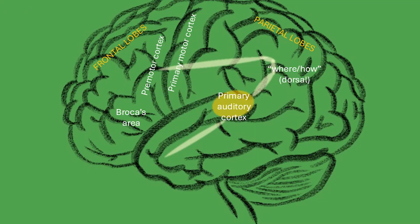Sounds at different elevations reverberate around the ears and ear canal differently — a sound high up versus low down produces distinct patterns. The brain uses, in effect, a model of the shape of the head to determine whether a sound is coming from above or below. Another claim about the dorsal stream is that it functions as a 'how' route as well as a 'where' route — it has motor properties in addition to spatial properties.